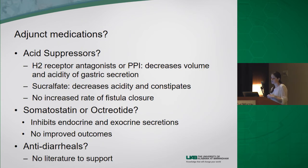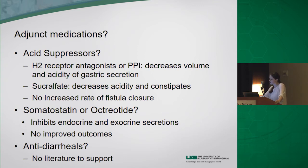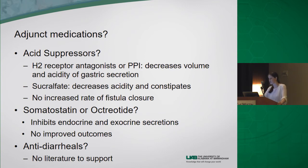Regarding adjunctive medications: acid suppressors such as H2 receptor antagonists or proton pump inhibitors decrease the volume and acidity of gastric secretions, and sucralfate decreases acidity and may cause constipation. However, data does not support an increased rate of fistula closure with these agents. H2 blockers and PPIs do help prevent gastritis and stress ulceration. Somatostatin or octreotide inhibit endocrine and exocrine secretions, but no studies have shown significant outcome improvement. Antidiarrheals are sometimes used to try to convert high-output to low-output fistulas, but again there is no good literature to support this.